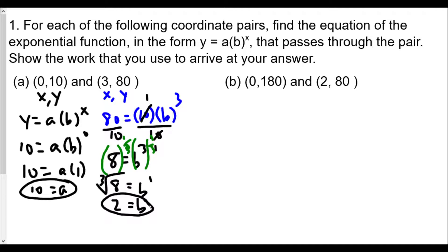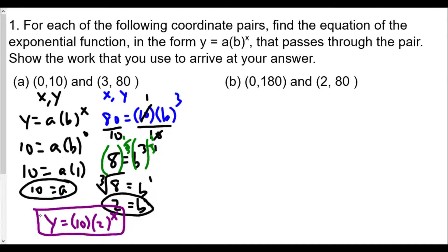Now that we have a = 10 and b = 2, our exponential function for part a is y = 10 · 2^x. This is the equation of the exponential function that passes through the points (0, 10) and (3, 80).